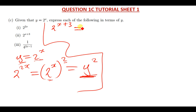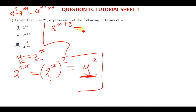Now let's do the second one: 2 to the power (x + 3). This is also simple. When you are multiplying indices with the same base, you simply add the powers. So here the base is 2, and the powers are being added, meaning we had 2 to the power x multiplied by 2 to the power 3.